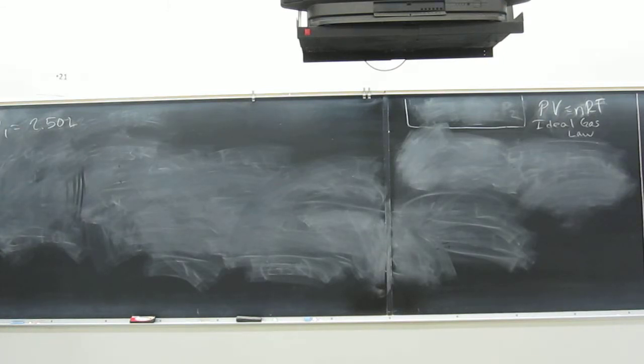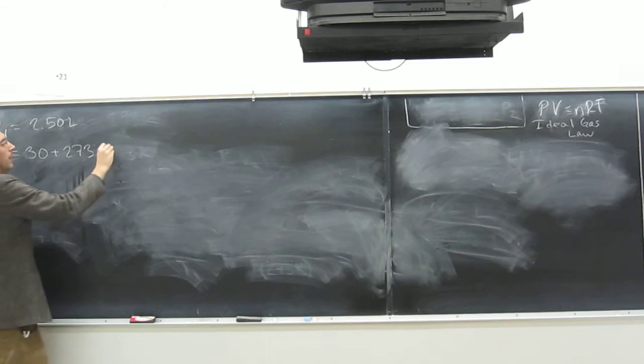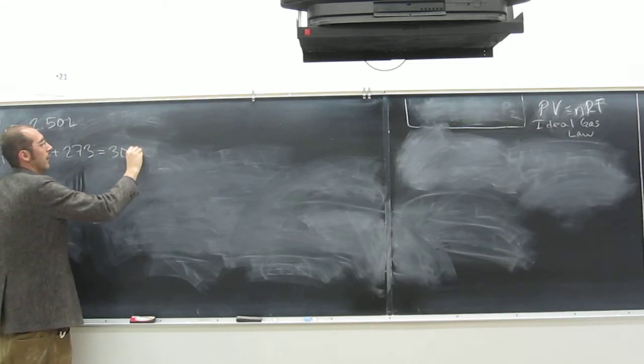T1, do we know that? 30 degrees Celsius, and remember we want to put these into Kelvin. So how do we do that? Add 273. And what does that equal? 303 Kelvin.